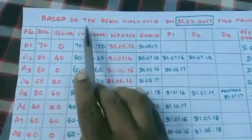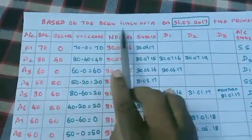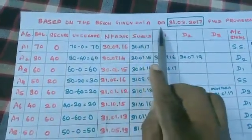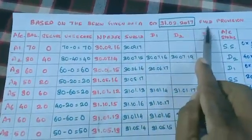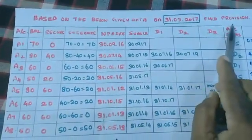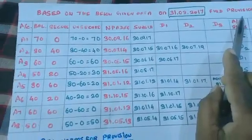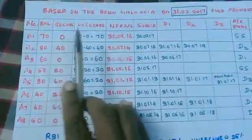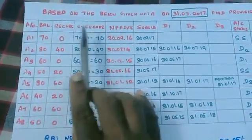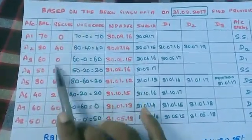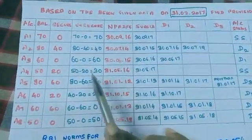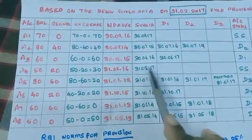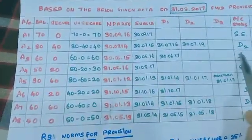Based on the below mentioned given data on 31-3-17, find the provision. Here the red marked items are problems and green ink are solutions.